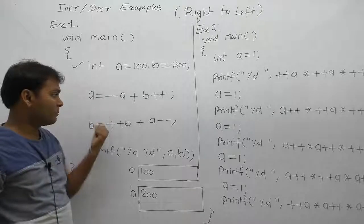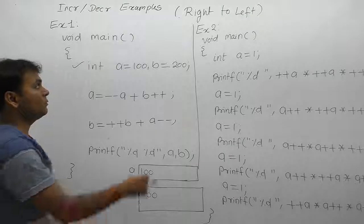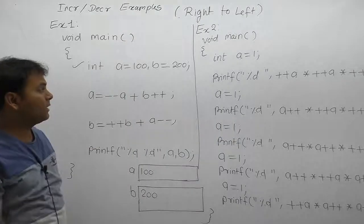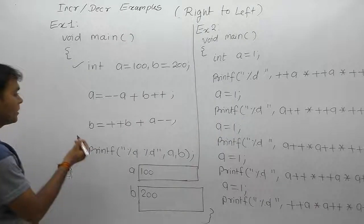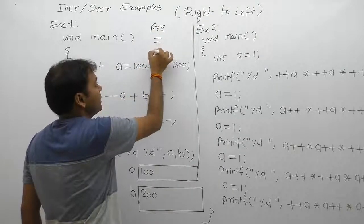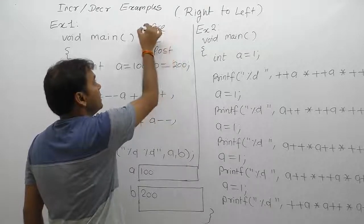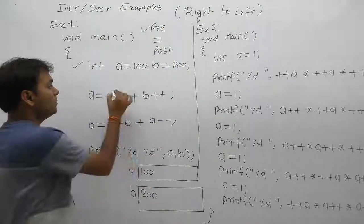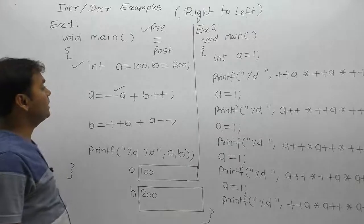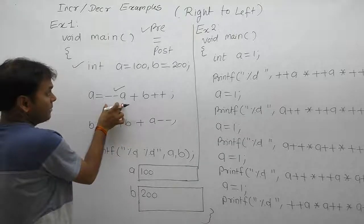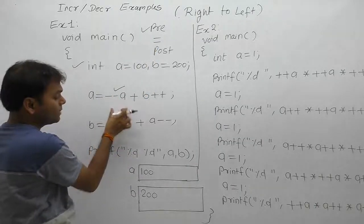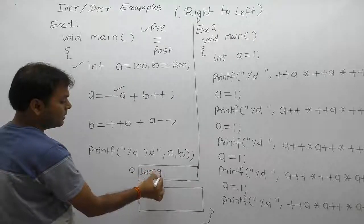In this case we apply the assignment rule, because the variables are already initialized by 100 and 200. We apply assignment, then follow the same rule: all pre first, then assignment, then post. How many pre operations are there? Only one pre, which is a pre-decrement. So pre-decrement is performed first — a is decremented by one, a becomes 99.